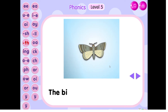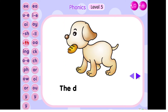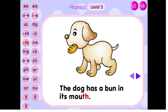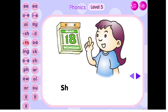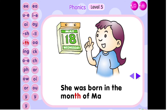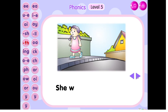The big moth is on the wall. The dog has a bun in its mouth. She was born in the month of May. She was walking along the pathway.